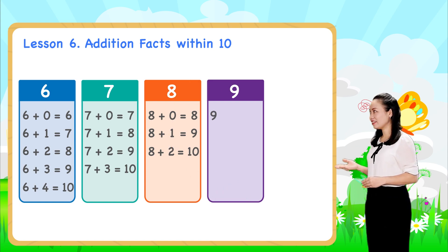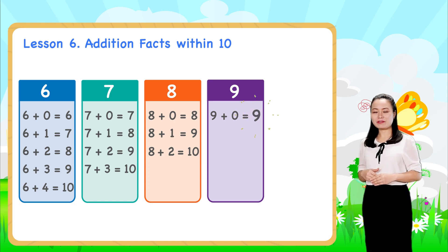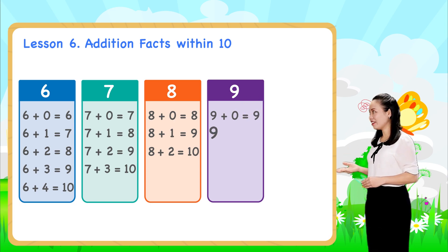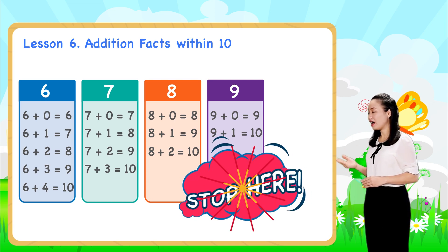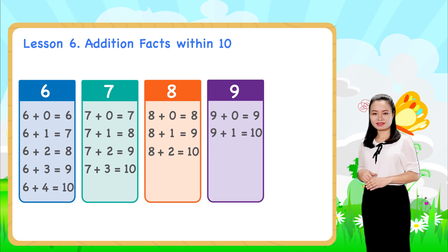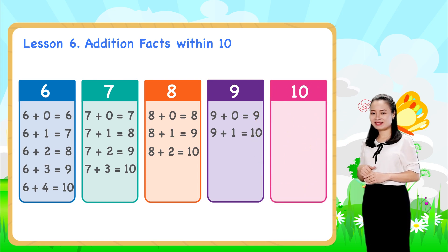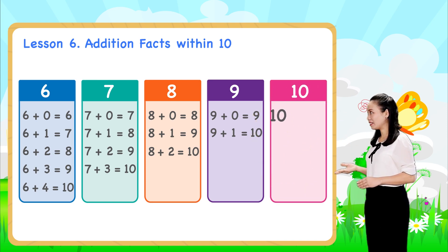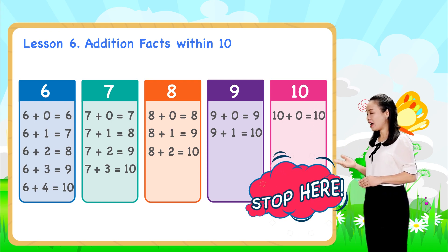Nine plus zero equals nine. Nine plus one equals ten. We'll stop here for now. Ten plus zero equals ten. We'll stop here for now.